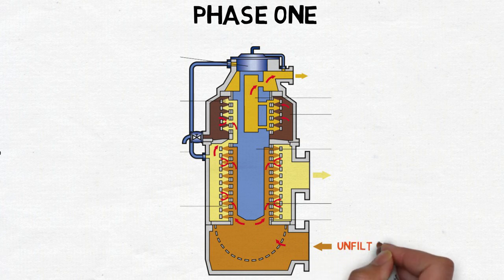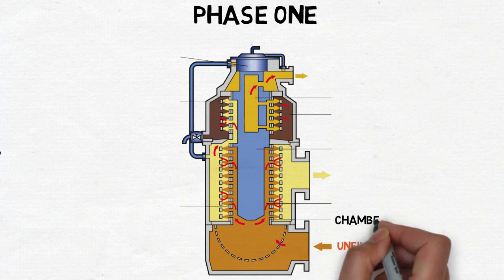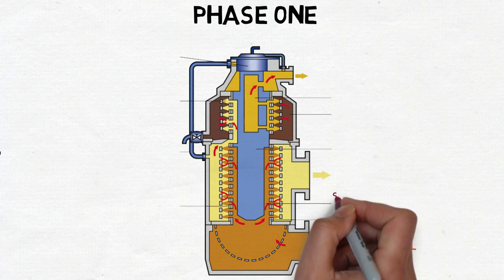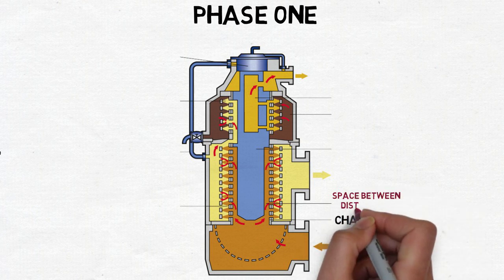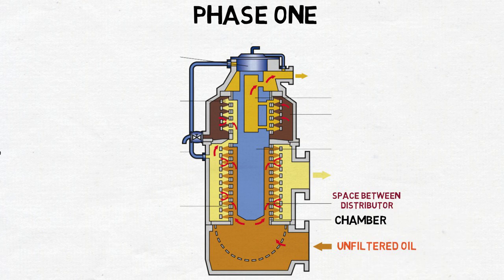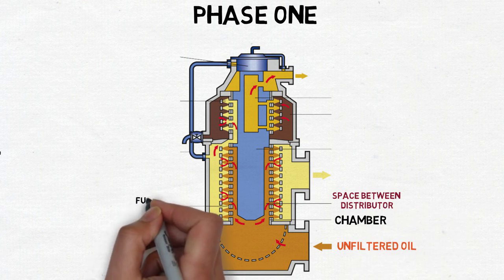Unfiltered oil enters the full flow chamber of the filter and flows into the chamber, which is the space between the distributor and the inner perimeter of the sleeve where filtering elements are fitted.